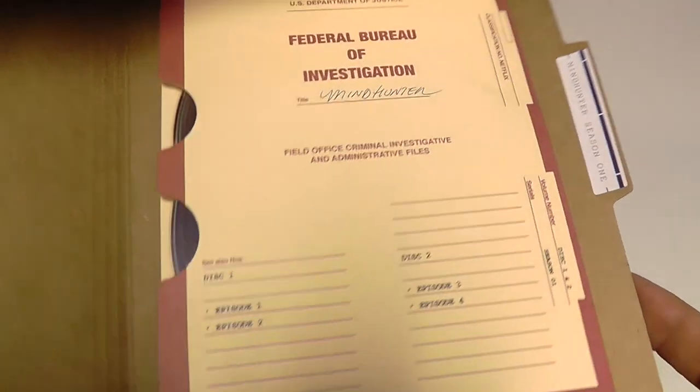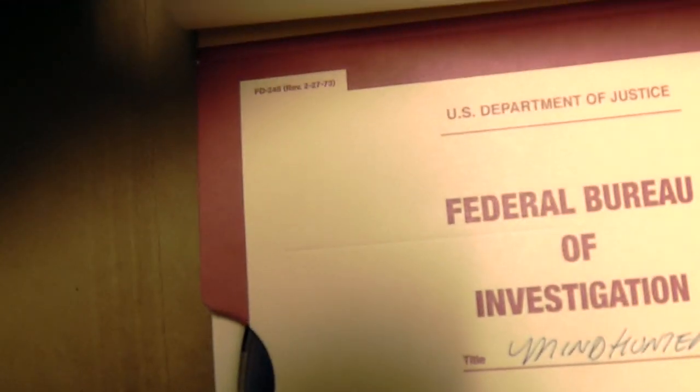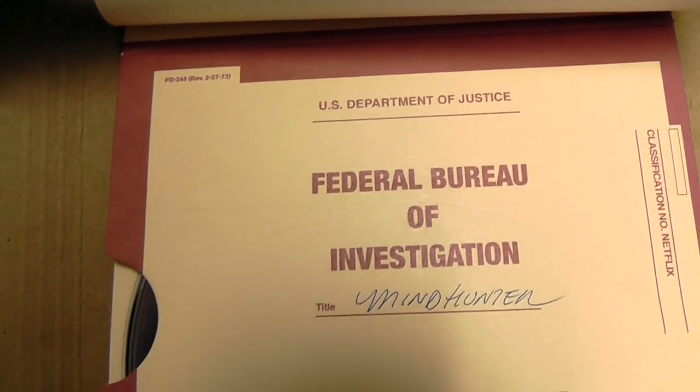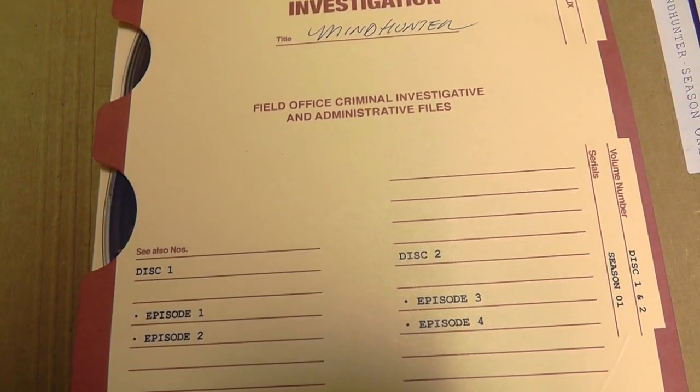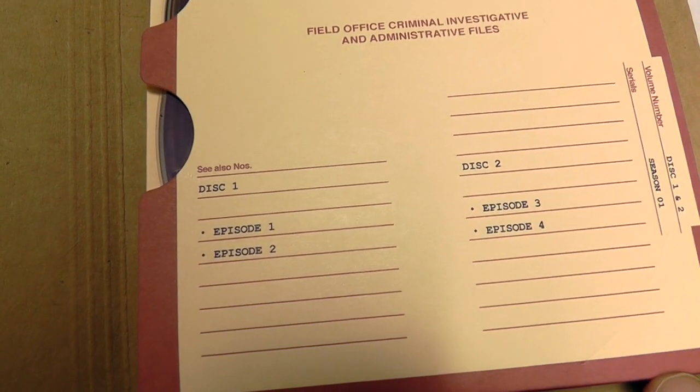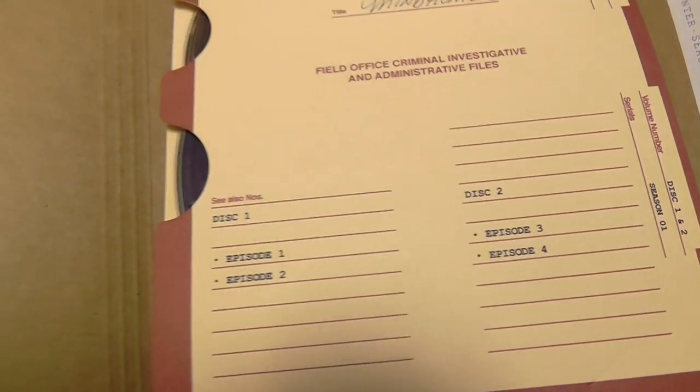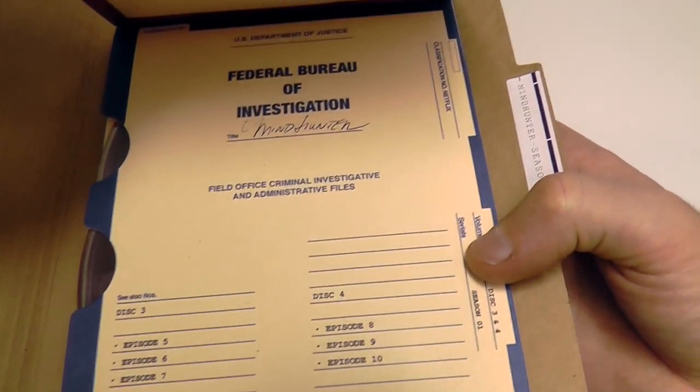Now we come to the sort of two last pages if you want to say, and here we actually have the DVDs. So you've essentially got four discs. Here's the first sort of interior folder, sort of hard to get a lighting on there. So yeah, Mindhunter field office, criminal investigation and administrative files. Got disc one, episodes one and two. Disc two, episodes two and three.